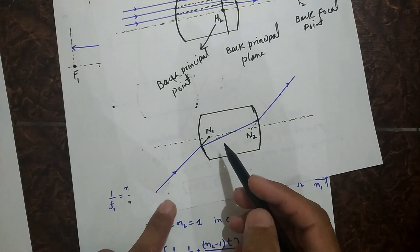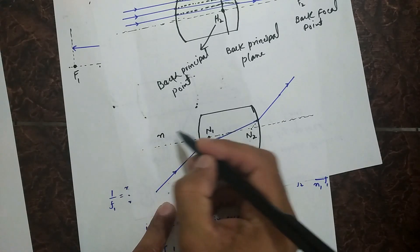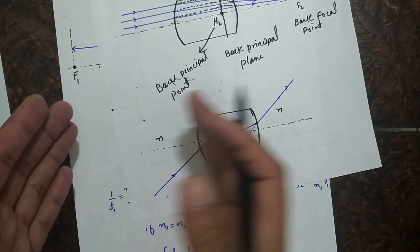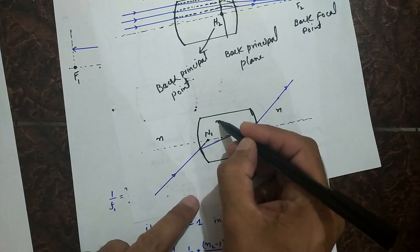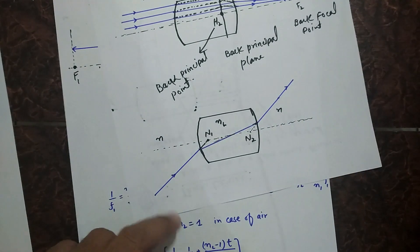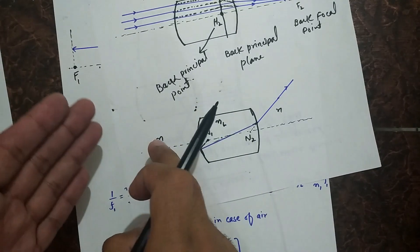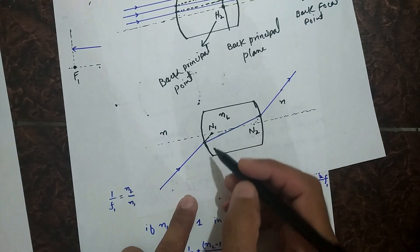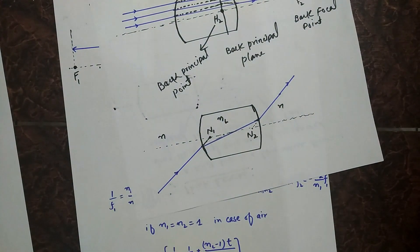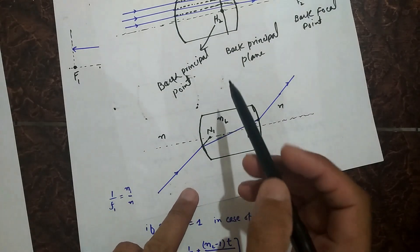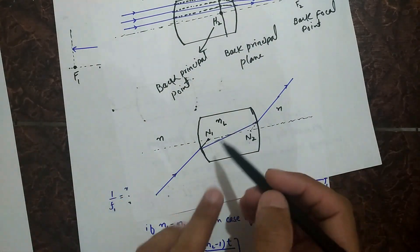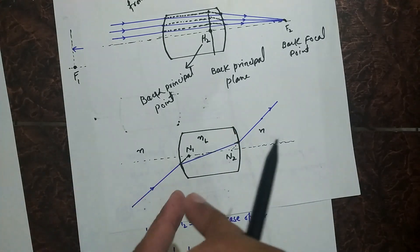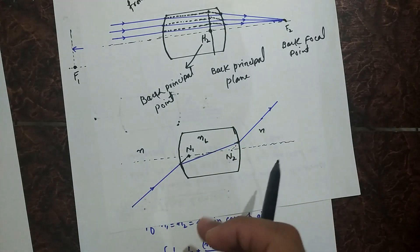Remember that if the refractive indices on the front and back sides of the lens are the same — for example, air on both sides with refractive index 1, and the lens has refractive index nl — then the nodal points and principal points will coincide. That means the front nodal point and front principal point will occur at the same location, and similarly the back nodal point and back principal point will coincide.